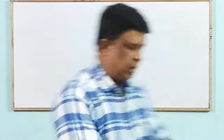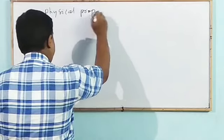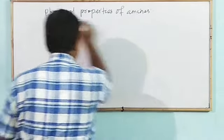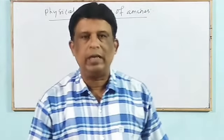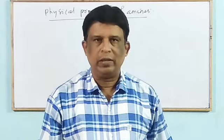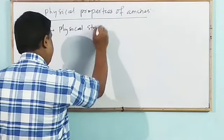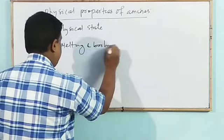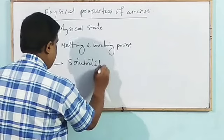Let us discuss one by one. First is physical properties of amine. Under the heading of physical property, two to three points are there: one is physical state, that means appearance; next, melting point and boiling point; and last one is solubility.